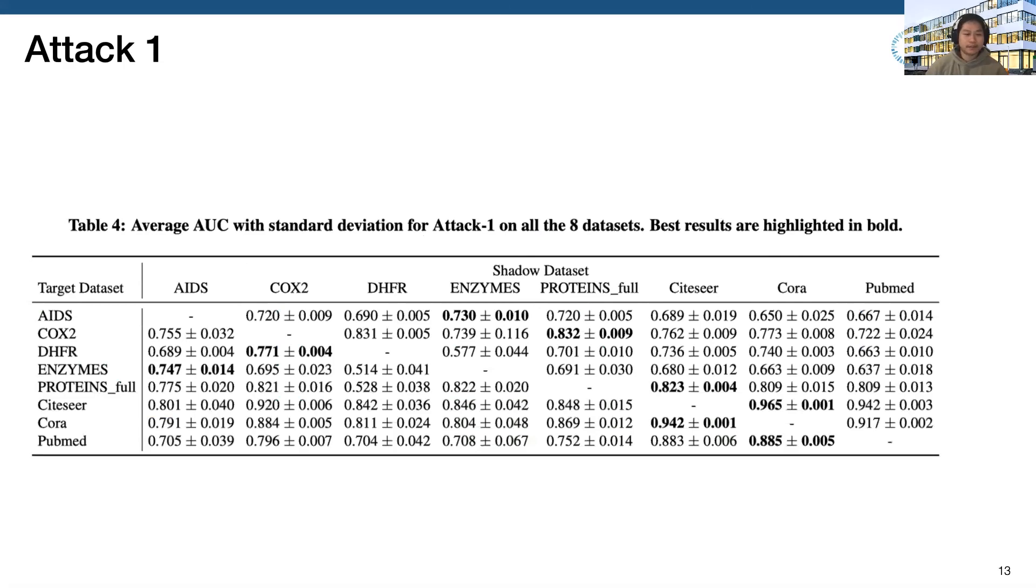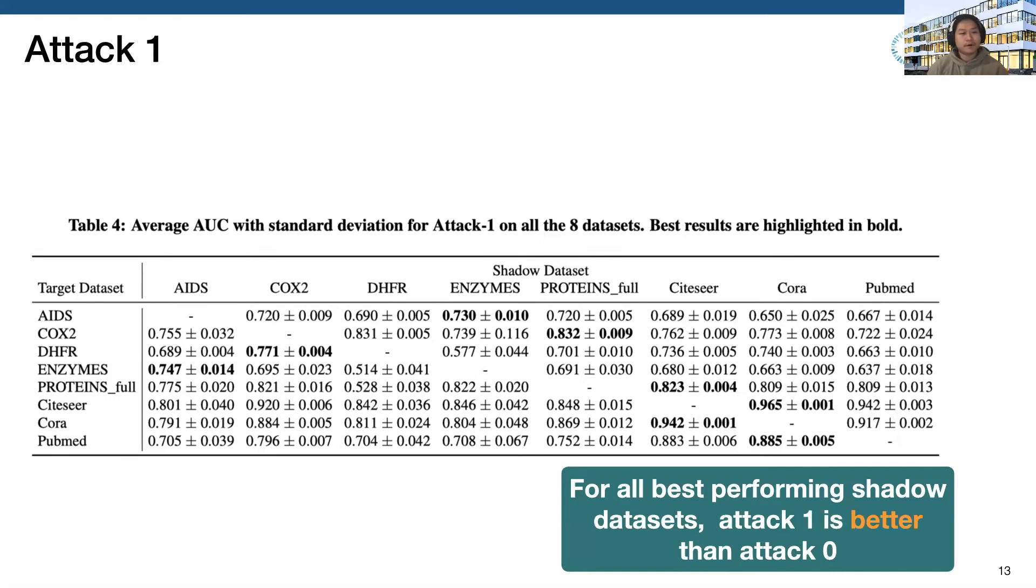Here we show the performance in attack one. Each column represents a shadow dataset, and each row belongs to a target dataset. We calculate the mapping between them. The best results are highlighted in bold. First of all, the AUC score from the best performing shadow dataset has a consistent improvement on all datasets compared to attack zero. The result indicates that the adversary can indeed transfer knowledge from the shadow dataset to enhance her attack. An interesting finding is that for a chemical dataset, like the first five, the best shadow dataset is normally a chemical dataset as well. Similar results can be observed for citation datasets. This shows that it is more effective to transfer knowledge across datasets from a similar domain.